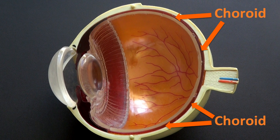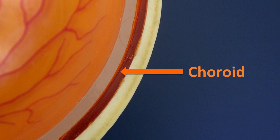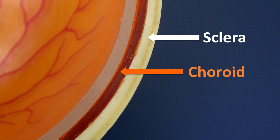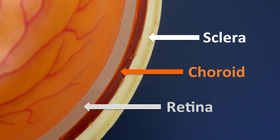The choroid appears at the back part of the eye, in between the sclera and the retina.